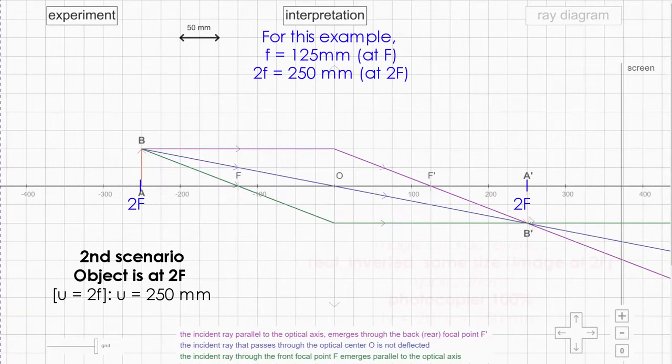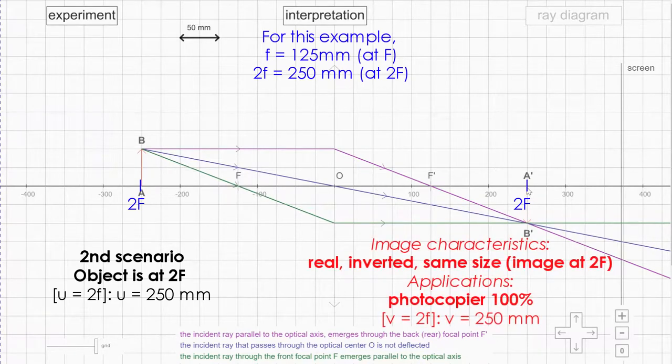Take a look here. The image is once again real, inverted, and it is same size as the object. So there's no modification. The application for this will be your photocopier machine - 100%. A4 goes in, A4 comes out.